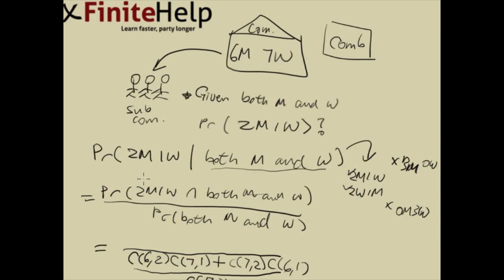Now the top part, when you see this intersection sign, you should think and. So this would be two men and one woman and both men and women. So what does this mean? If you think about it, both men and women and two men and one woman. What do they have in common? Well, two men and one woman is a subcommittee that have both men and women.